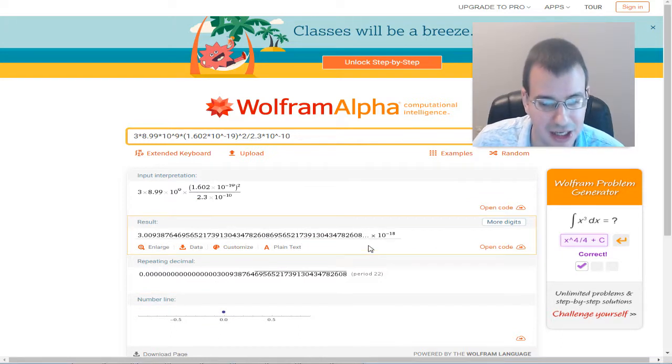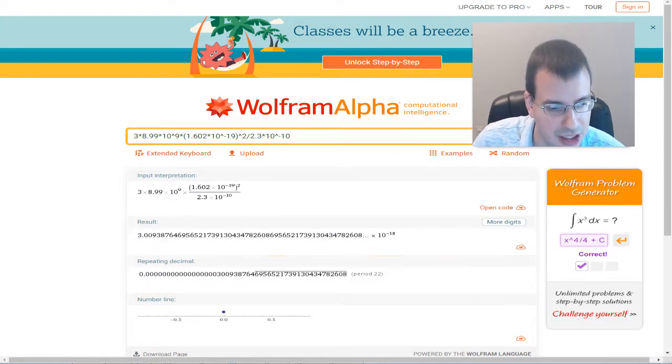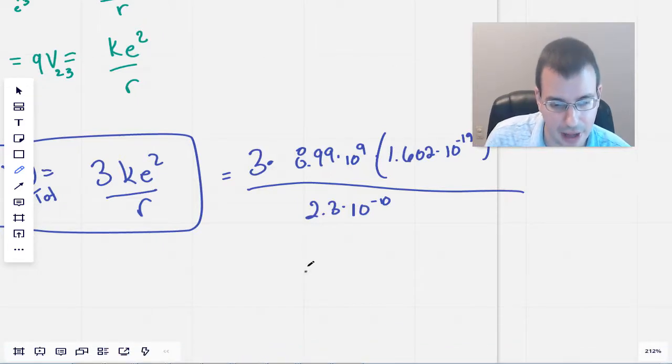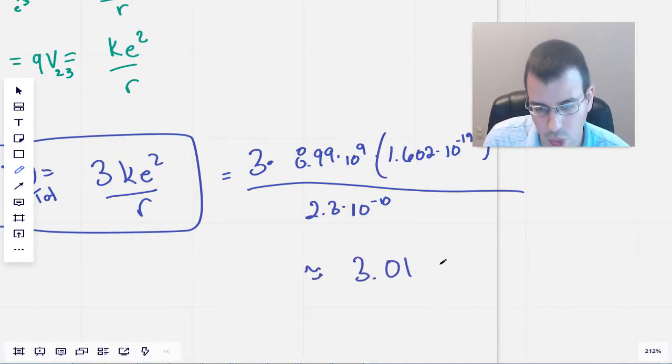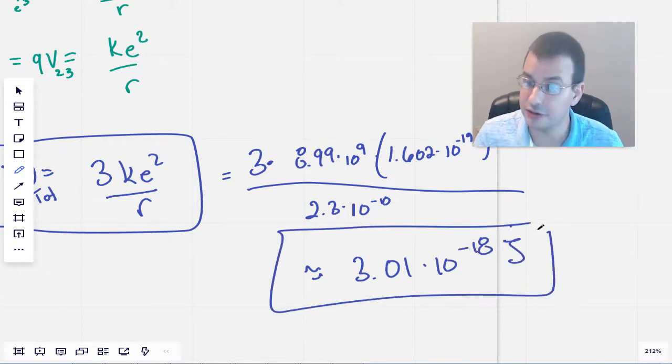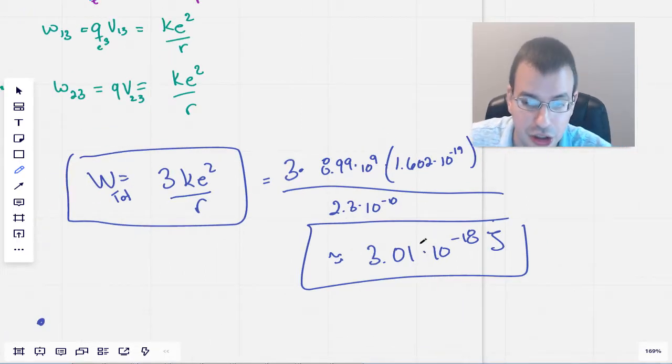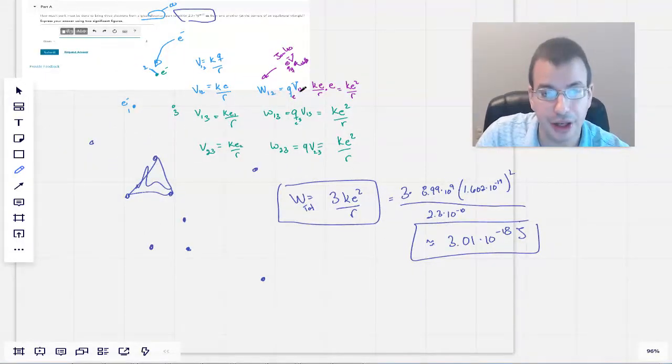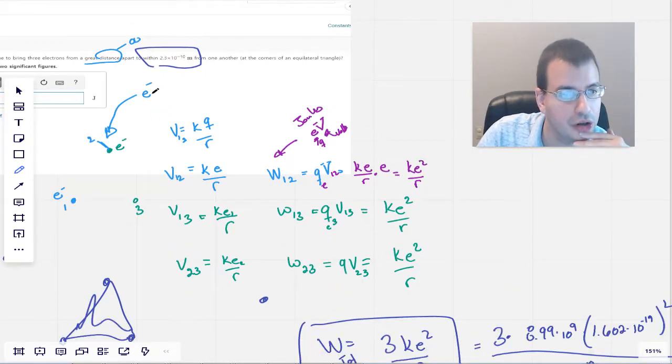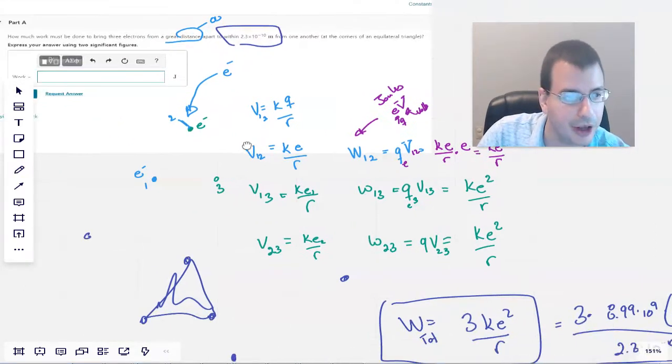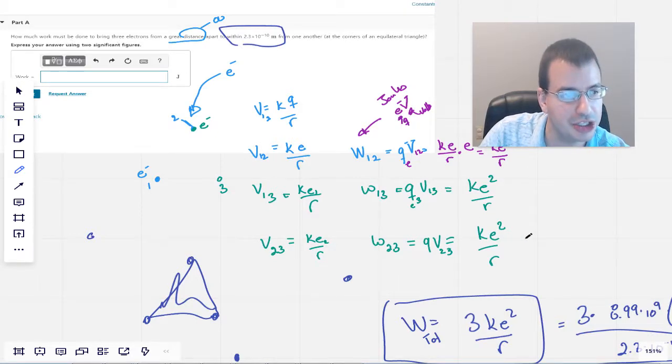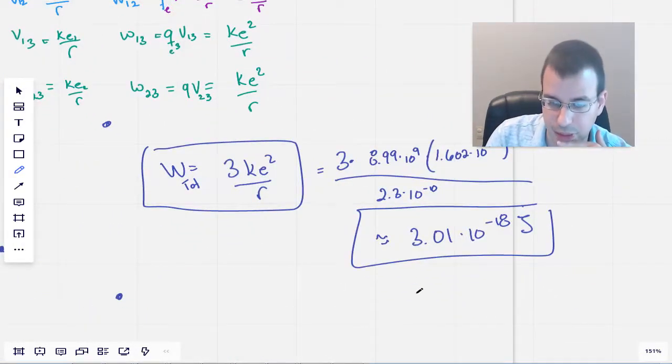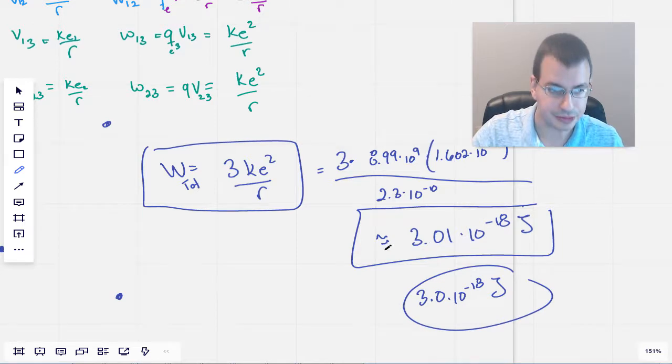So the answer then is 3 times 10 to the negative 18th. We have about 3.01 times 10 to the negative 18th joules, which seems all right. Because electrons are very small, their charge is very small. And so you're going to get a very small amount of work required to bring them close together. I guess it depends on how close, but this is about the size of an atom, an angstrom. And then you want to express it in terms of two significant figures. So it's probably 3.0 times 10 to the negative 18th joules. So that's how we do that one.